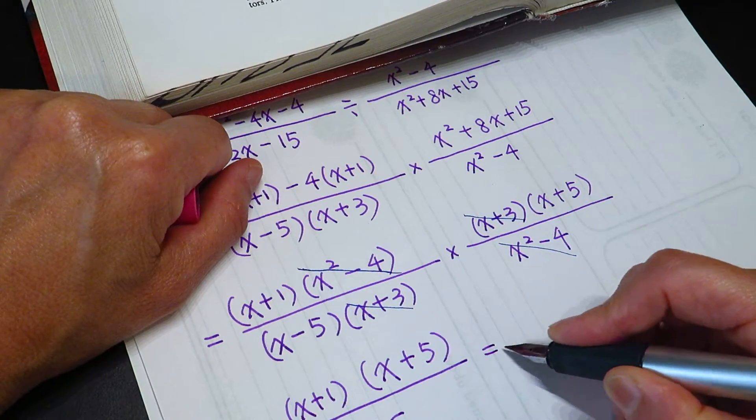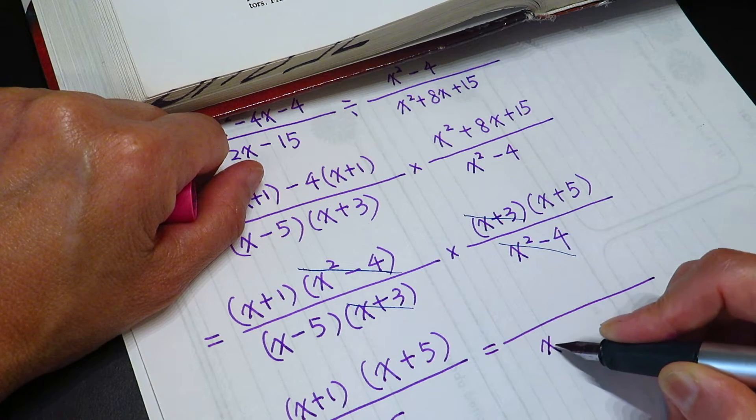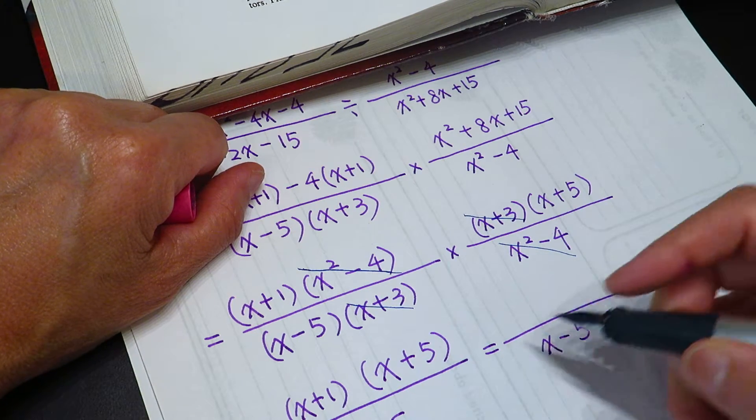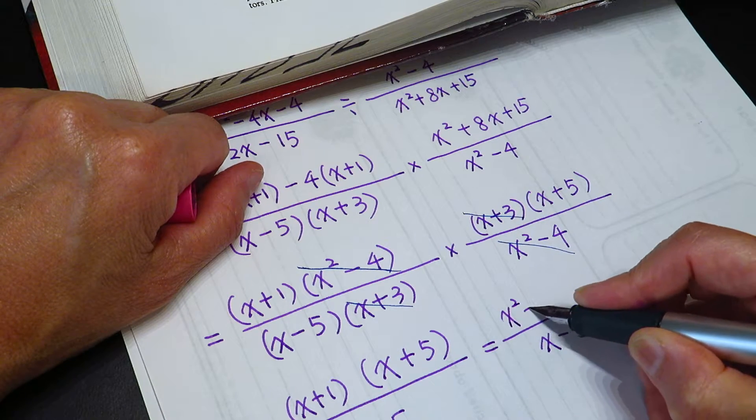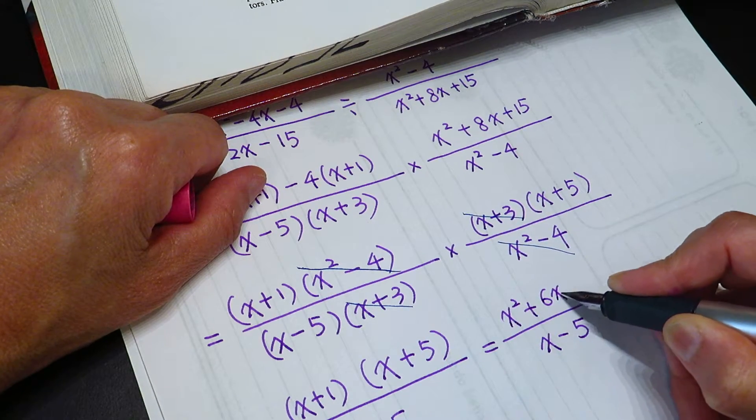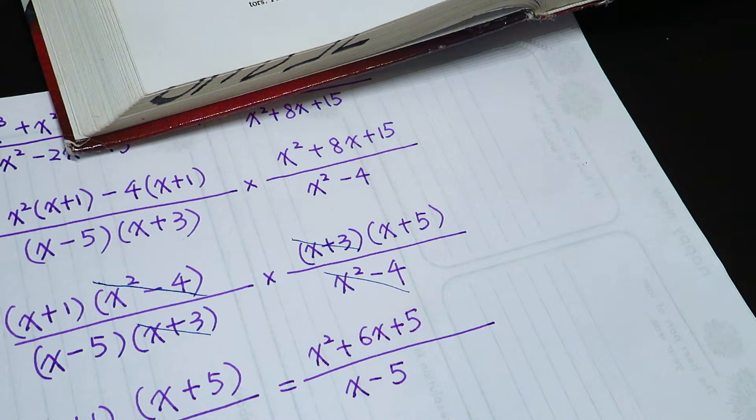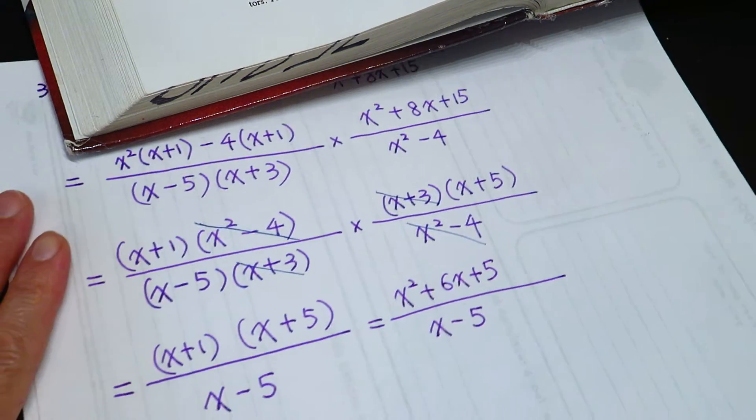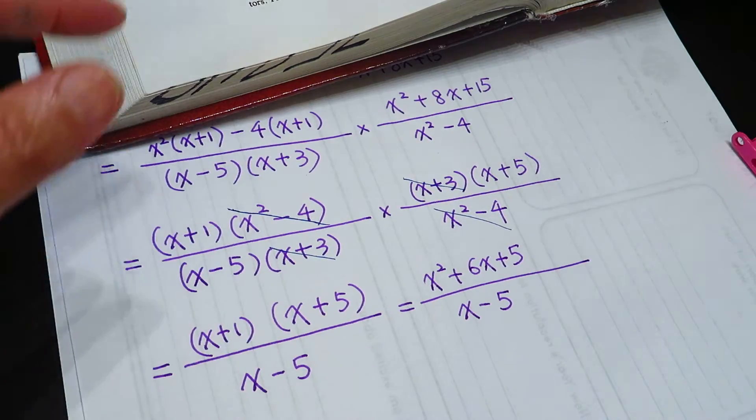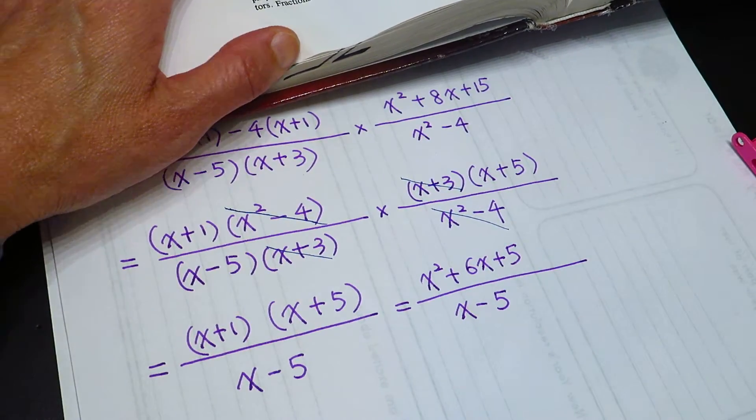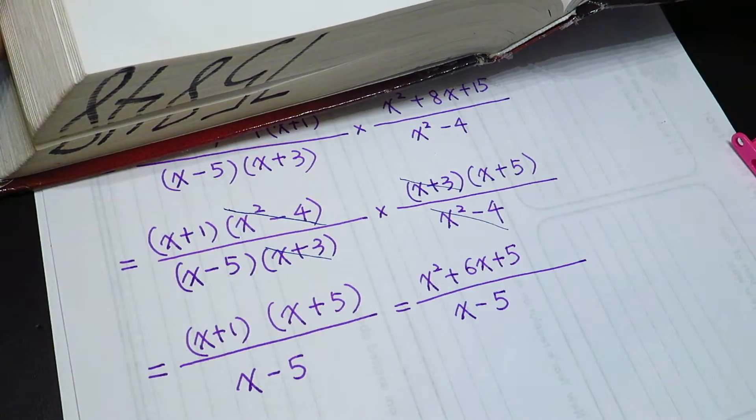If you are not comfortable, you can write like this: x minus 5, x square plus 6x plus 5. I don't know, the book has, we will see which one is the right answer. This one,